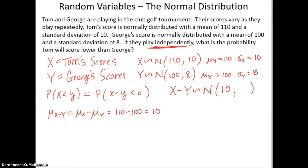So what is the difference in their scores? Well, if Tom averages 110 and George averages 100, their difference in their average should be about 10.